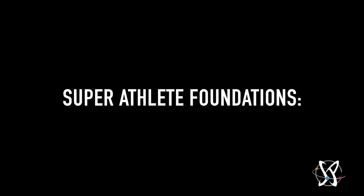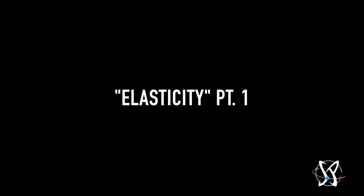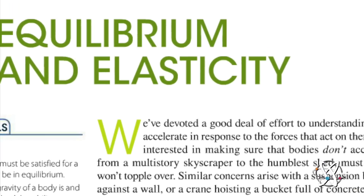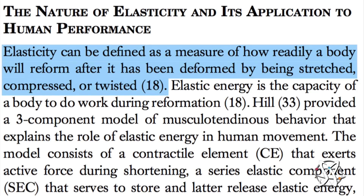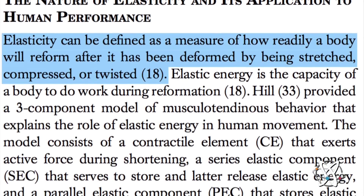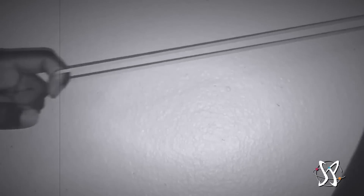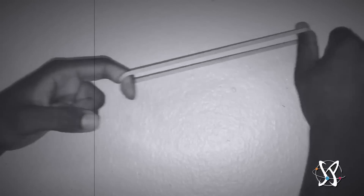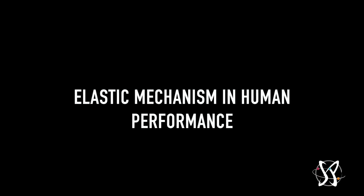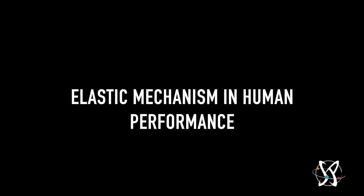Today we're going to go over a little physics and talk about something called elasticity. Elasticity is the ability for an object to return back towards its normal state after being deformed — like stretched, twisted, or compressed. Think of a rubber band as being elastic, and play-doh or putty as not elastic.